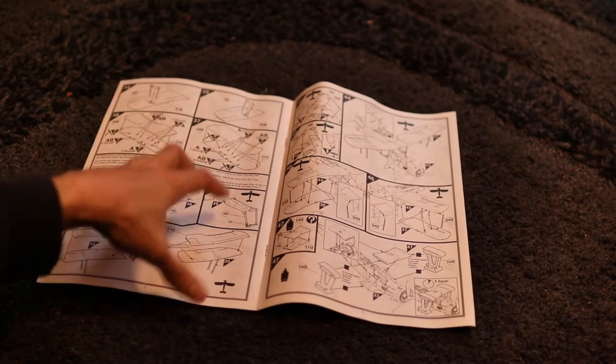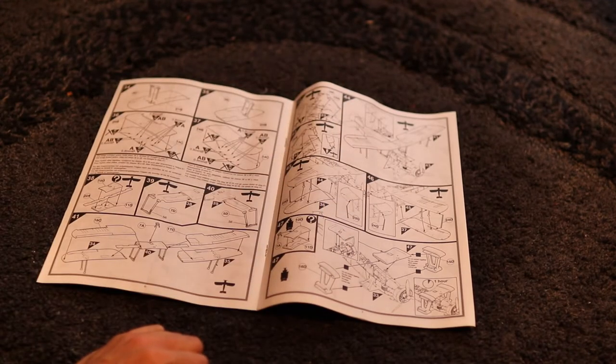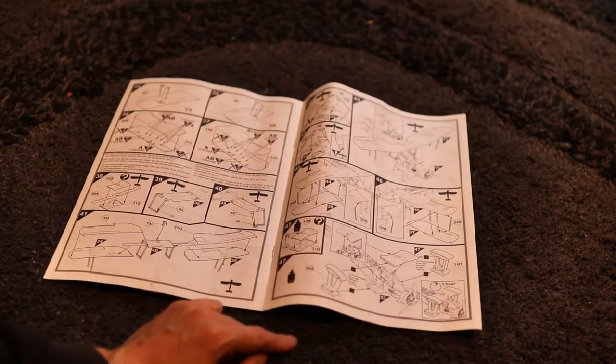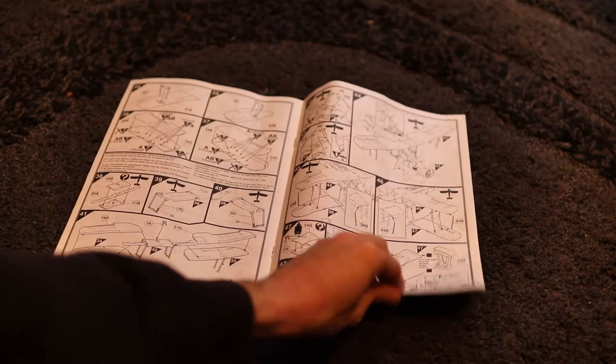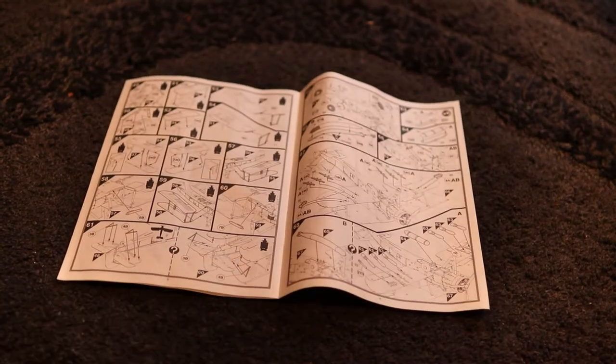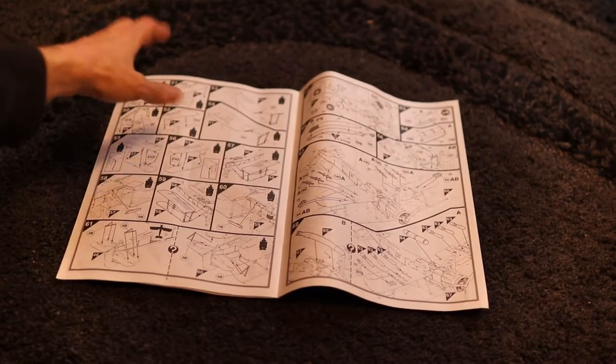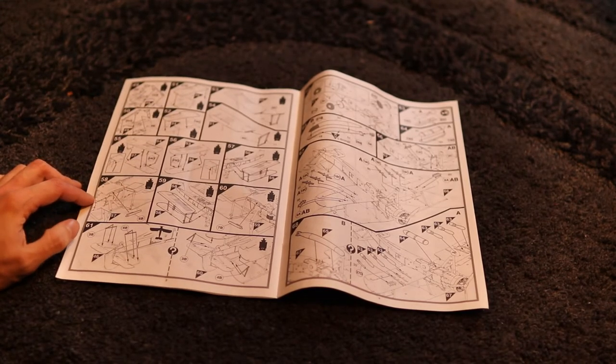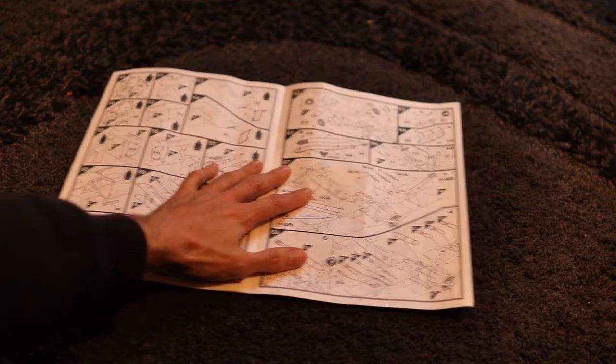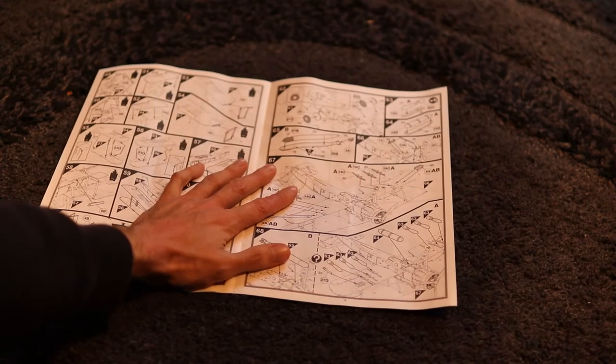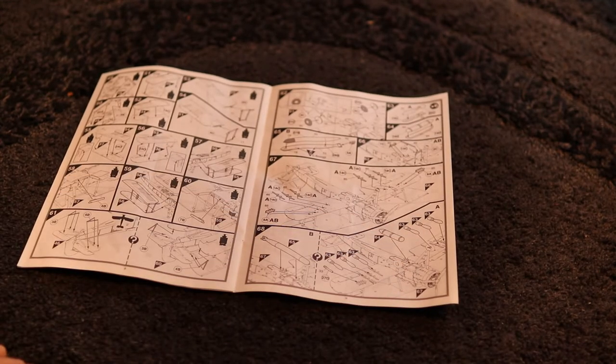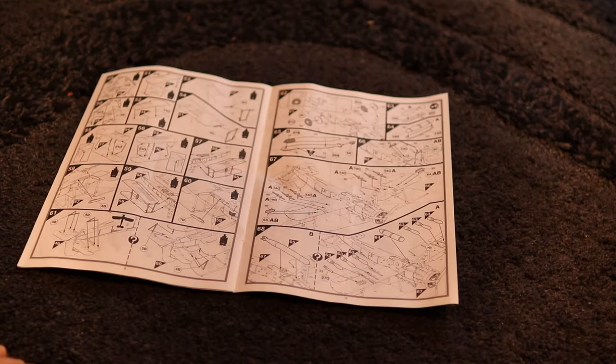You can see you've got your wing construction there for the wings open, and then if you are doing the wings folded you've got some different options here and that's called out very nicely for you. So you can see now we've got a whole raft of folded wing options before moving on to the undercarriage and ordinance. And again you've got a lot of different options available, not just your standard torpedo.